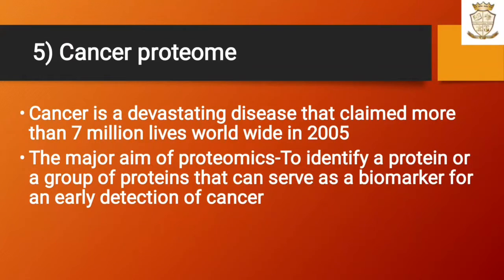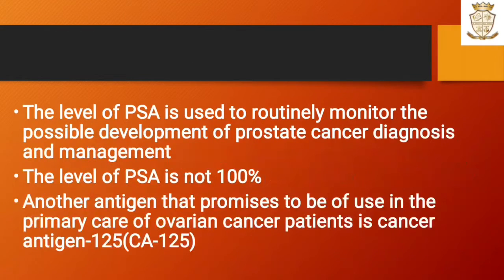The fifth one is cancer proteome. Cancer is a devastating disease that claimed more than 7 million lives worldwide in 2005. The major aim is to identify a protein or group of proteins that can serve as a biomarker for early detection of cancer. The level of PSA is used to routinely monitor possible development of prostate cancer, though PSA is not 100% reliable. Another antigen, cancer antigen 125, promises to be useful in the primary care of ovarian cancer patients.